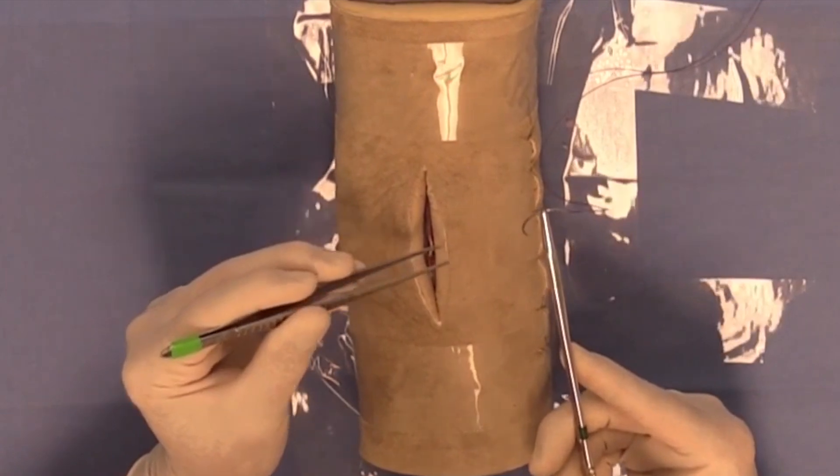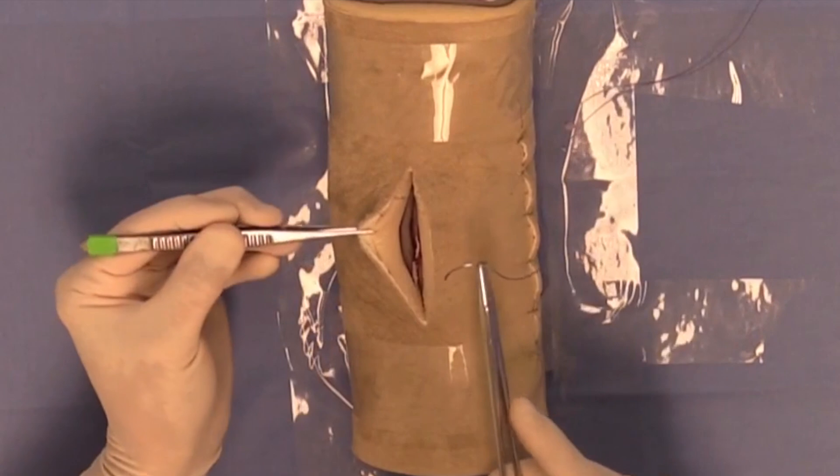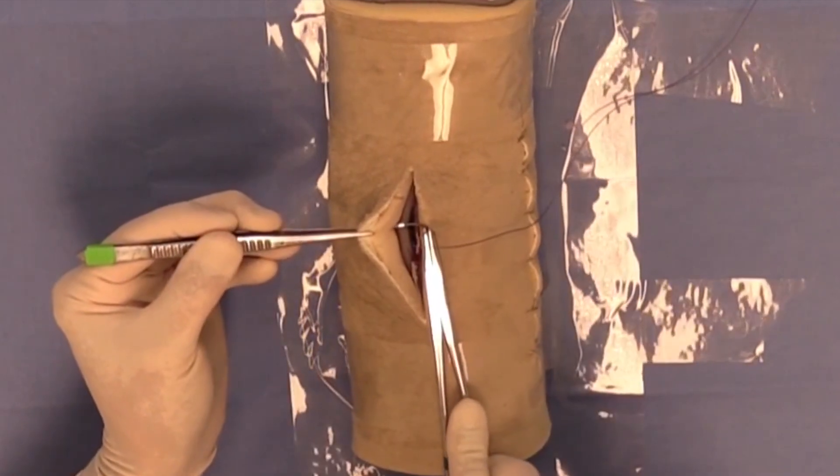However, to bury the knot, you need to start on the far side of the incision and go from deep to superficial.